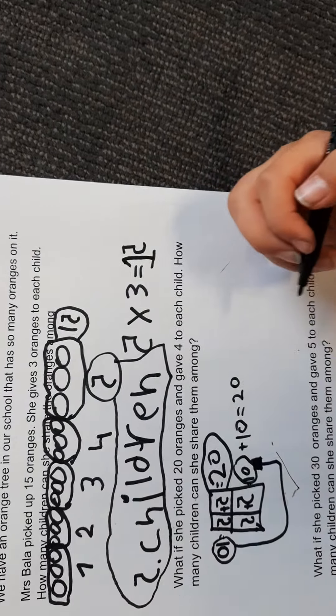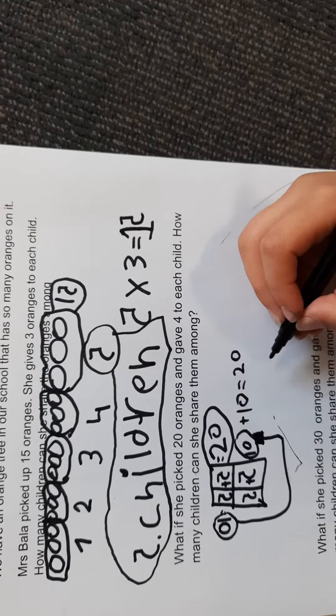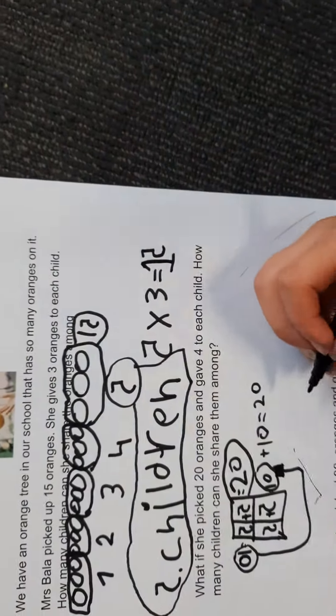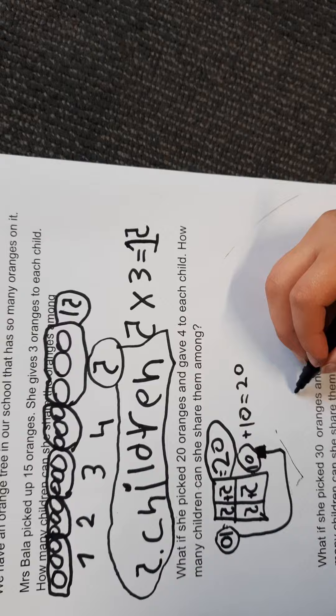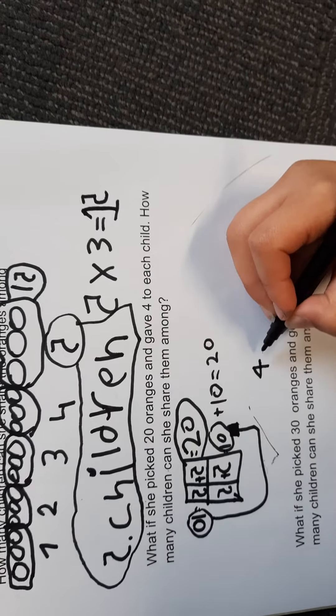30 oranges. So how many children did she give it to? Four. Did she give it to four children? Yeah.